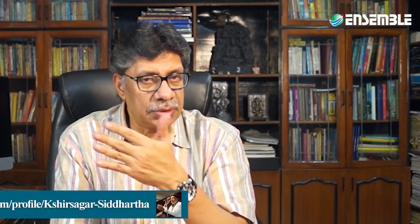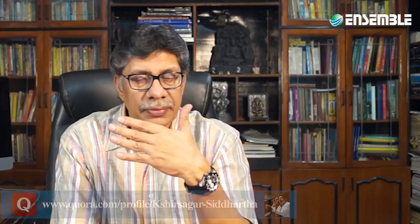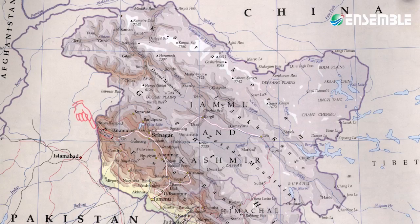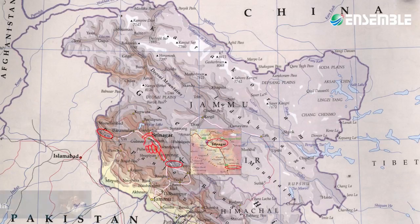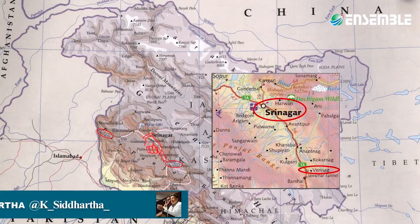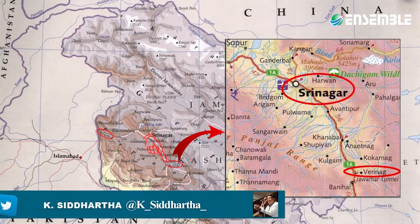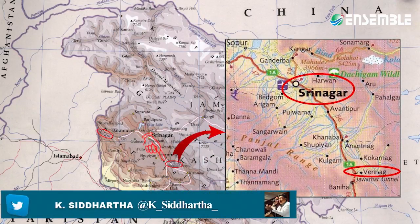The Jhelam, also known as Vitasta, is a tributary of the Indus river that rises near a spring in Verinag, in the valley of Kashmir. It is the westernmost of the five rivers of Punjab and passes through Srinagar.